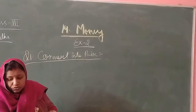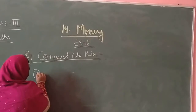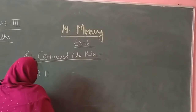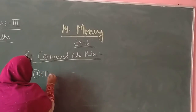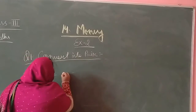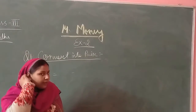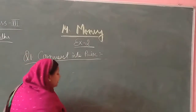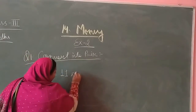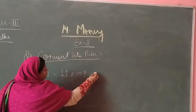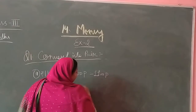The first question is 11 rupees. The sign is 11. So what do we need to do? Simply, 11 rupees is equal to 11 multiplied by 100 paisa. So we get 1100 paisa.